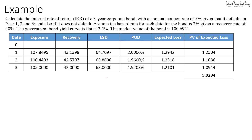Using the data from my previous video, we are asked to calculate the internal rate of return of a three-year corporate bond where the annual coupon rate is five percent. We'll calculate the IRR given that it defaults in year one, two, and three, and also calculate the IRR if it doesn't default. We'll use the same assumptions: hazard rate is two percent, recovery rate is forty percent, risk-free rate is flat at three point five percent, and the market value of the bond is one hundred point six nine two one, which is the fair value computed in the last video.